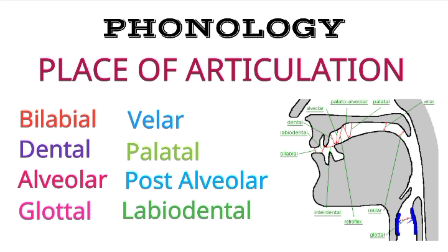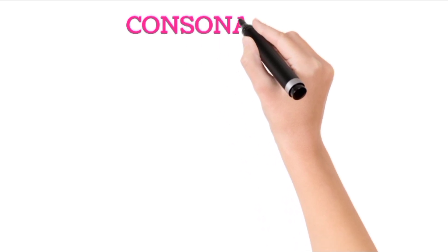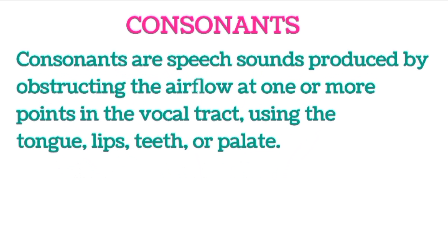Now let's move to the video and see how many consonants there are and what a consonant is. We will start with the basic definition. There are two different types of sounds in English phonetics and phonology: consonants and vowels. Consonants are speech sounds produced by obstructing the airflow at one or more positions in the vocal tract using the tongue, lip, teeth, or palate.